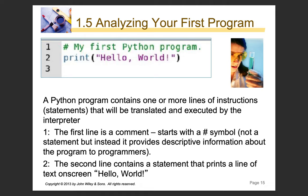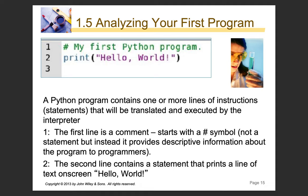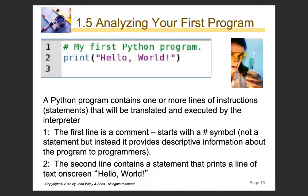Let's analyze our first program — the print Hello World program. A Python program typically contains one or more lines of instructions, called statements, that are translated and executed by the interpreter. The first line, shown in green, is a comment. It starts with a hash symbol, which makes the interpreter treat it as a comment — it provides descriptive information to humans but means essentially nothing to the computer. The second line, beginning with print, contains a statement that prints a line of text onto the screen, which should say Hello World.